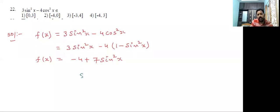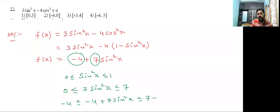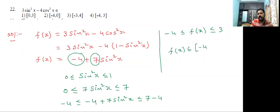Now, what is the range of sin²x? It is 0 to 1. Multiplying by 7: 0 ≤ 7sin²x ≤ 7. Subtracting 4 throughout: -4 ≤ 7sin²x - 4 ≤ 3. So the range of f(x) is [-4, 3]. The closed interval from -4 to 3.